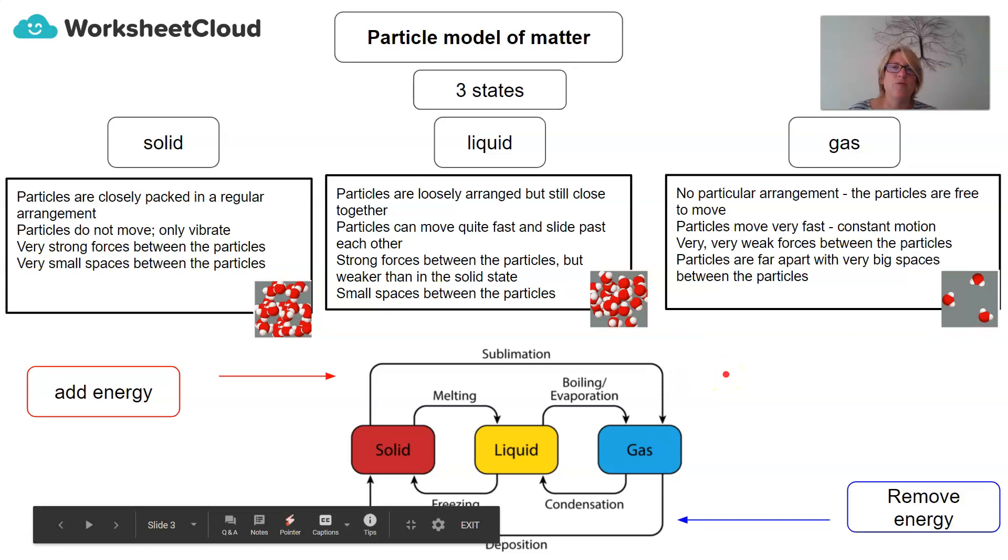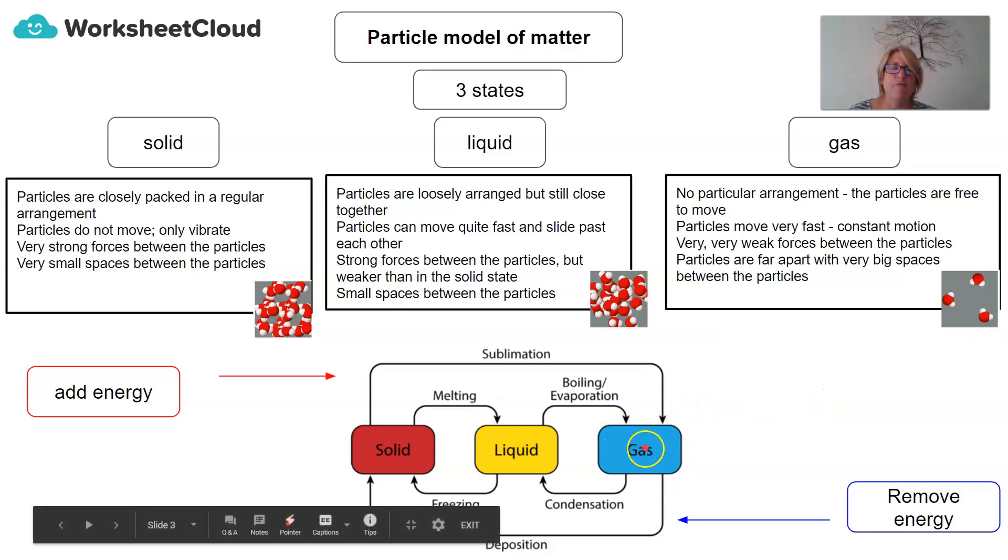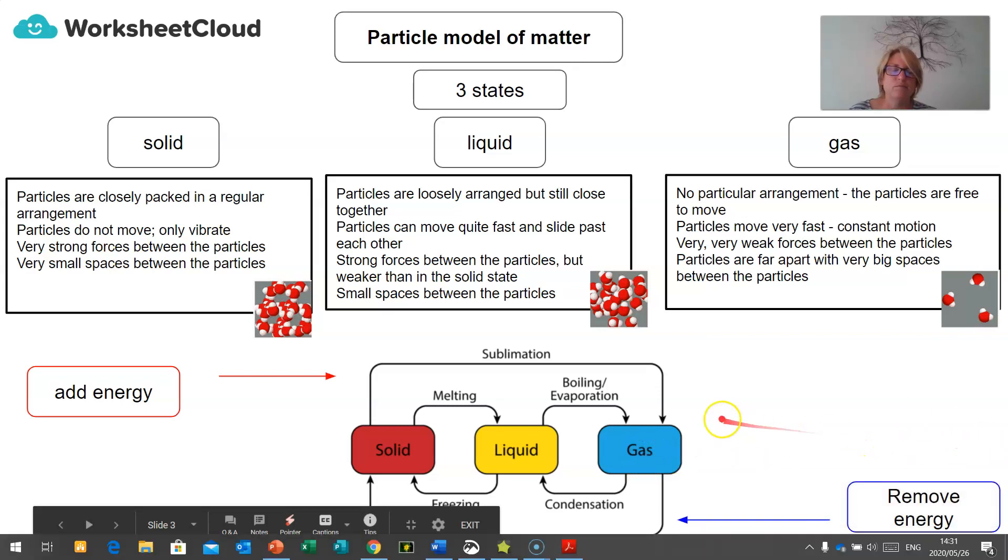We can also have a look at the three phases and states of matter and we can see what happens when we remove energy. So, when we have a gas, if we remove energy, it goes through a process of condensation. And it will cool and change its state into a liquid. And then if we continue to remove energy, the liquid will be converted into a solid and the process there is freezing.